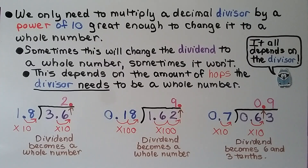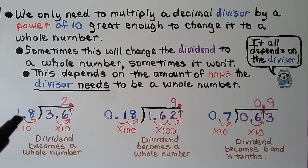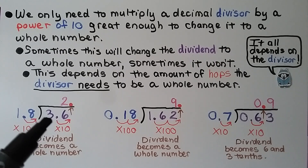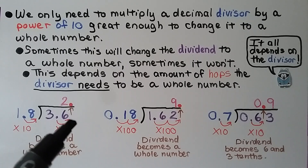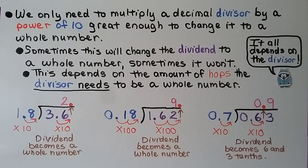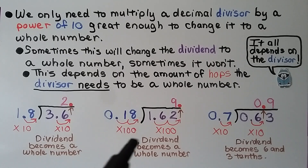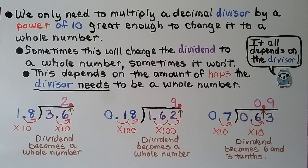We only need to multiply a decimal divisor by a power of 10 great enough to change it to a whole number. Sometimes this will change the dividend to a whole number, and sometimes it won't — it all depends on the divisor and the number of hops. For 1 and 8 tenths as divisor, we move it one hop by multiplying by 10, which forces the dividend to be multiplied by 10 and become a whole number. For 18 hundredths, we need two hops, multiplying by 100, so the dividend becomes a whole number — 162.